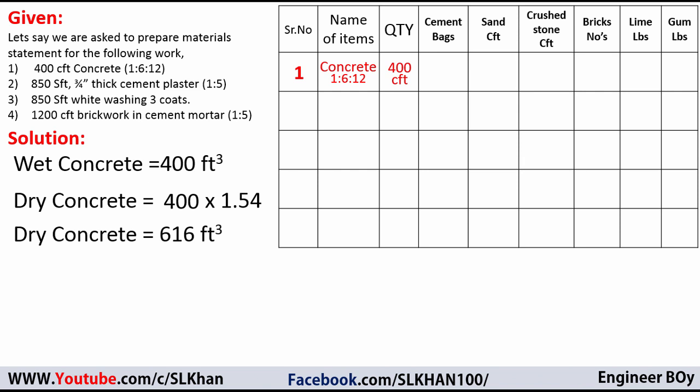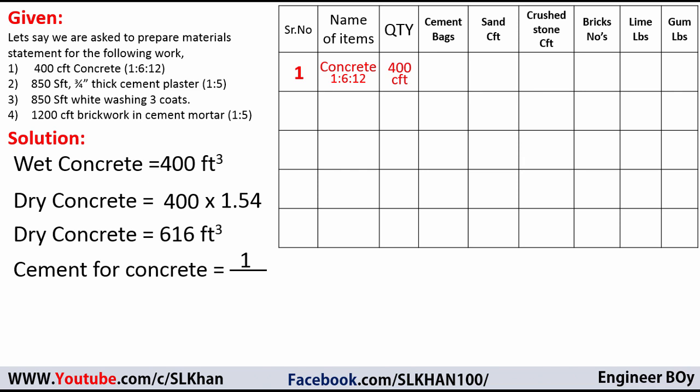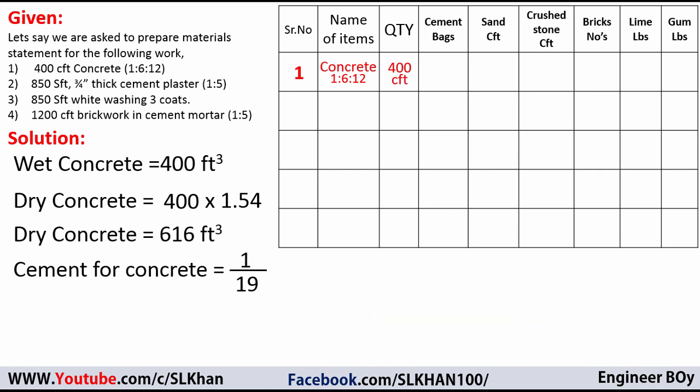The dry concrete works out to 616 cubic feet. Now we can calculate the cement for the concrete work of 400 CFT. The quantity of cement is the ratio of cement — which is 1 — divided by the sum of ratios, which is 1 + 6 + 12 = 19.